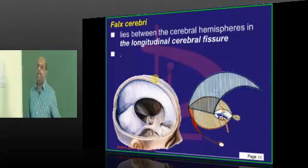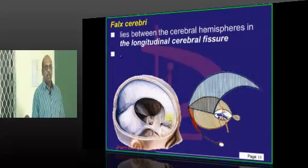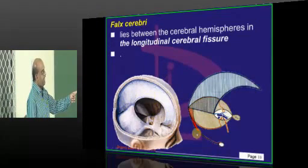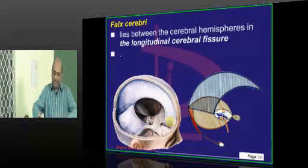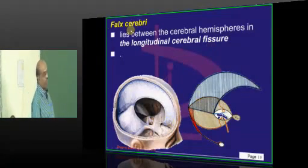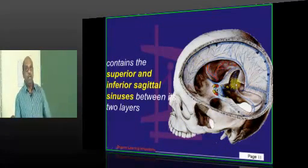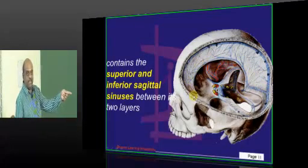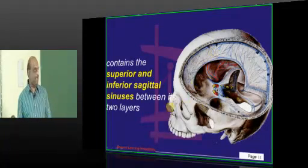What is meant by falx cerebri? Between the two cerebral hemispheres, the modification of the dura is typically located in the longitudinal cerebral fissure. Like a cabbage — if you separate the two cerebral hemispheres, both are separated by this dural partition which is called the falx cerebri. What does falx cerebri contain? It typically contains the superior sagittal sinus and the inferior sagittal sinus along its both edges.